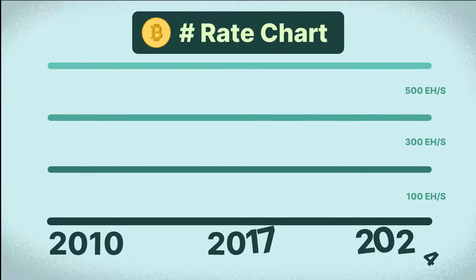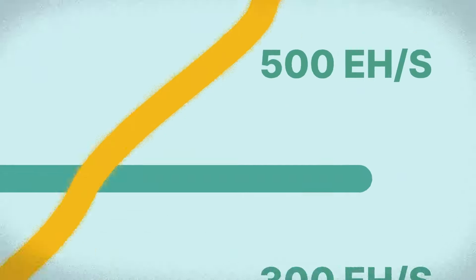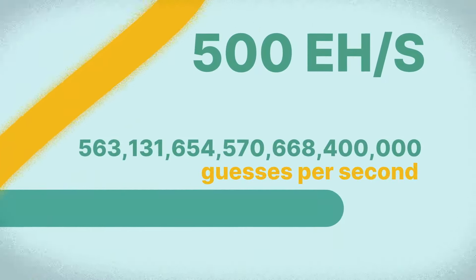For reference, the current Bitcoin network hash rate is over 500 exahashes per second, which is an astronomical figure.